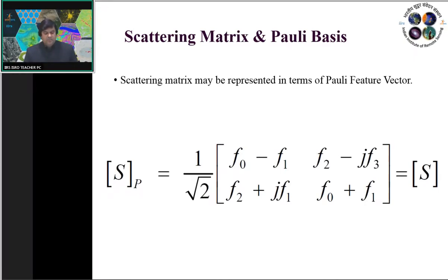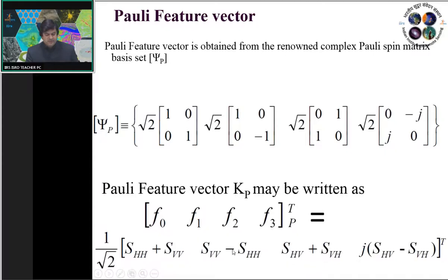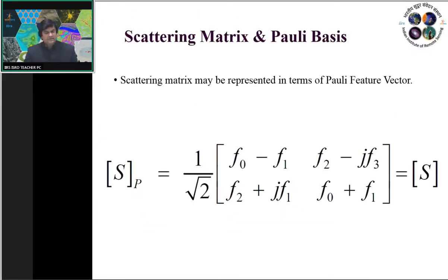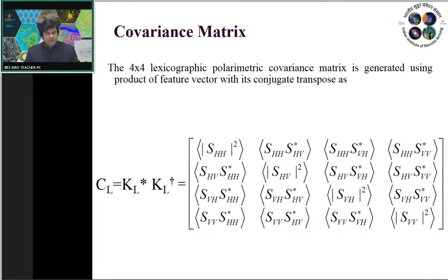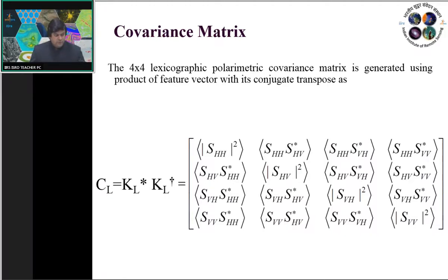The scattering matrix can be represented in terms of Pauli basis, where f0, f1, f2, and f3 represent the four Pauli feature vectors or Pauli basis elements. These first-order derivatives — lexicographic and Pauli feature vectors — are then used to generate second-order derivatives. The second-order derivative of the scattering matrix is the first-order derivative of the lexicographic or Pauli feature vector. With the lexicographic feature vector, the covariance matrix is generated; with the Pauli feature vector, the coherency matrix is generated.